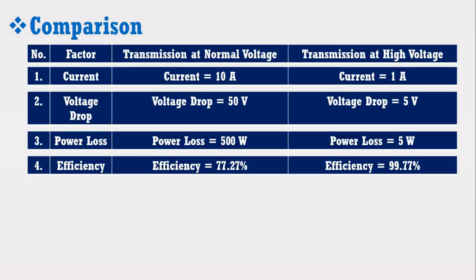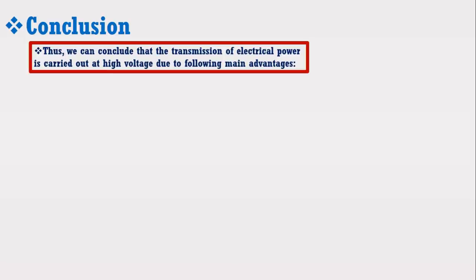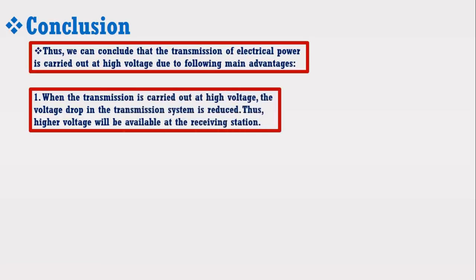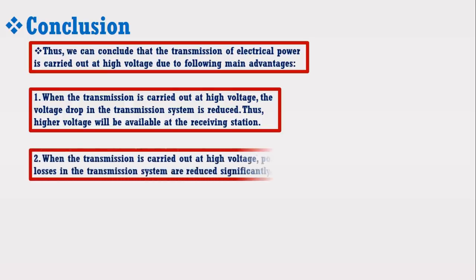Now just imagine the efficiency and power loss of the transmission system when transmission is carried out at 220 kV, or 500 kV, or 765 kV voltage. Thus we can conclude that the transmission of electrical power is carried out at high voltage due to the following main advantages. Advantage number 1: when transmission is carried out at high voltage, the voltage drop in the transmission system is reduced, thus higher voltage will be available at the receiving station. Advantage number 2: when transmission is carried out at high voltage, power losses in the transmission systems are reduced significantly.